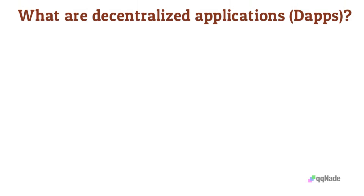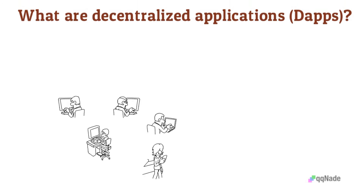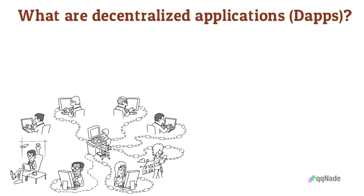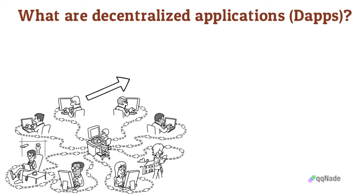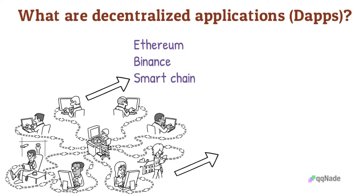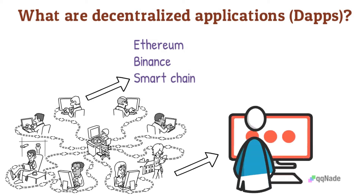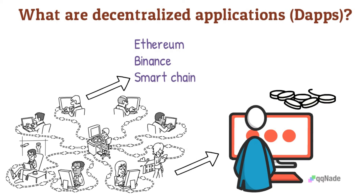A decentralized application is a regular application that runs on an open-source peer-to-peer network of computers. Some of the most famous decentralized apps run on blockchains like Ethereum, Binance Smart Chain, etc. They are called decentralized because the application is run by multiple computers, or nodes, in a network. Also, the ownership of decentralized apps is shared by users of the network through tokenization.